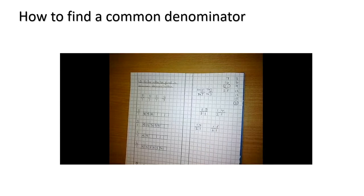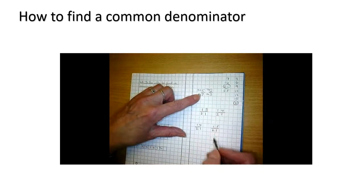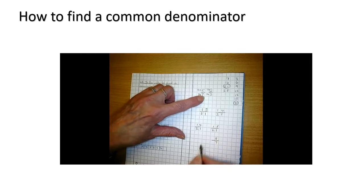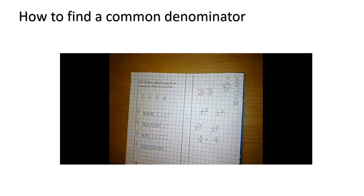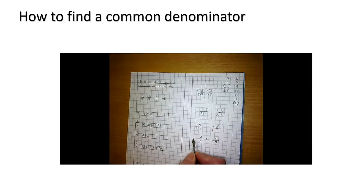I can clearly see that 14 twenty-firsts comes first and 15 twenty-firsts comes second. So that means I've got to swap them round. So that means 5 sevenths is larger than 2 thirds. 5 sevenths is larger than 2 thirds. If I go back to my original fractions.